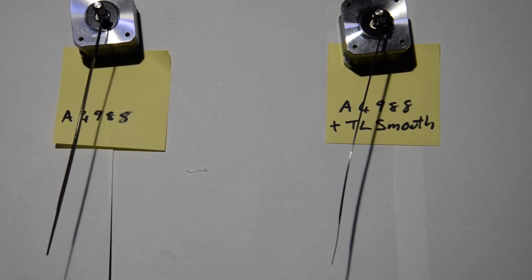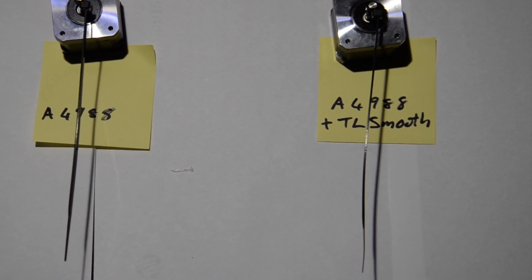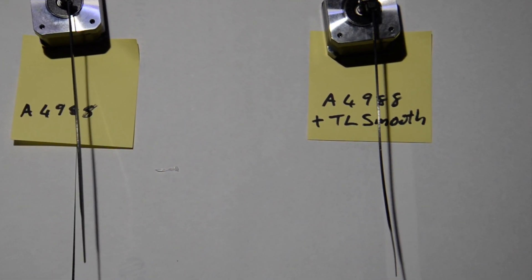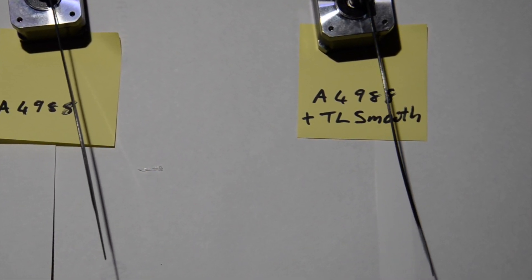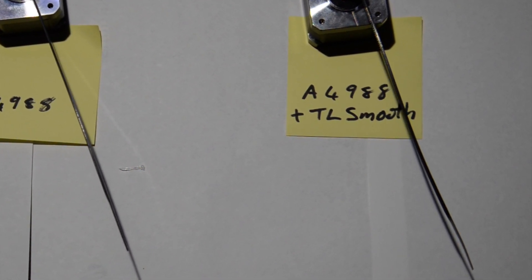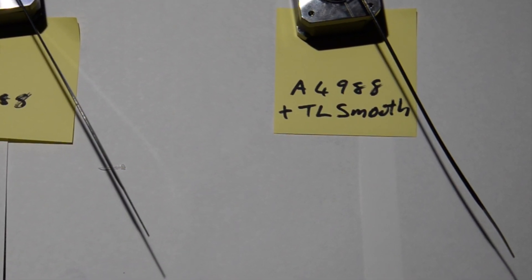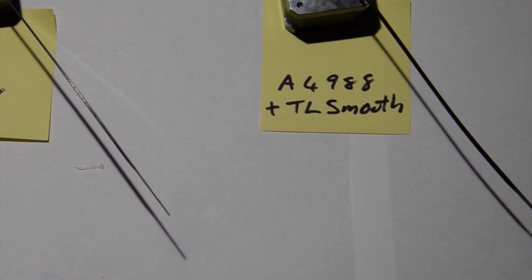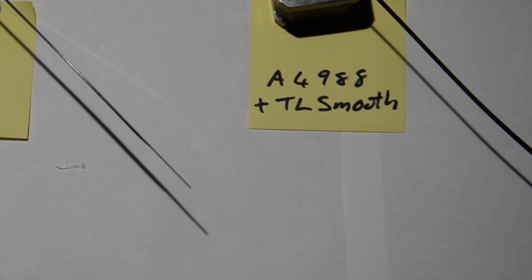Although I can see a little bit of a jump on the motor on the left, so if you're using it at slow speed like on an extruder, it might be worth it. But if we compare it to the DRV8825, you'll see the difference.